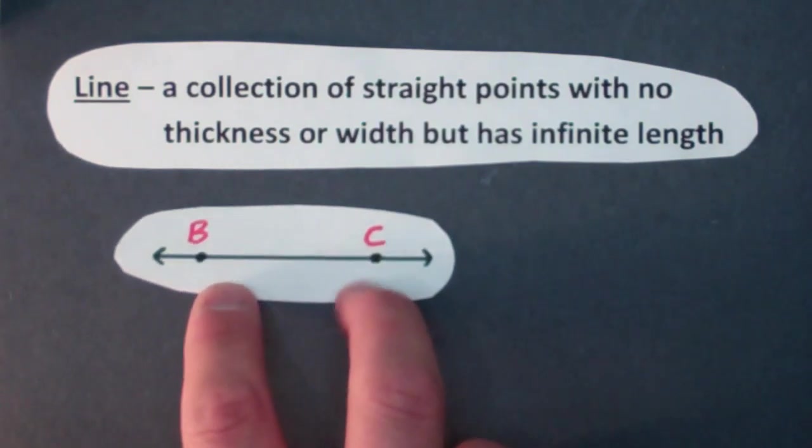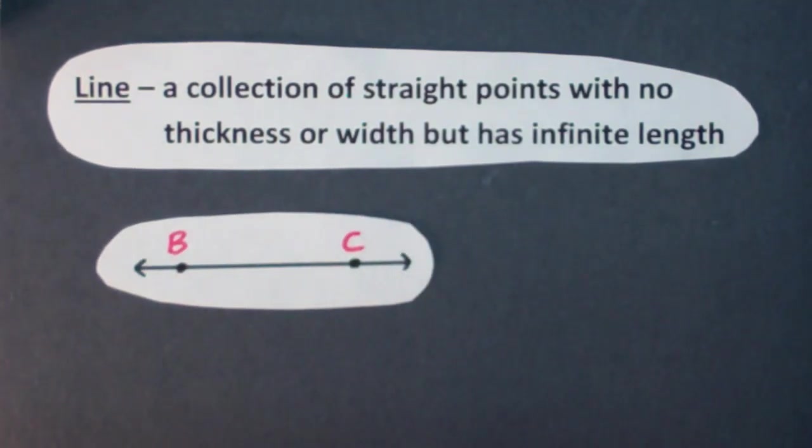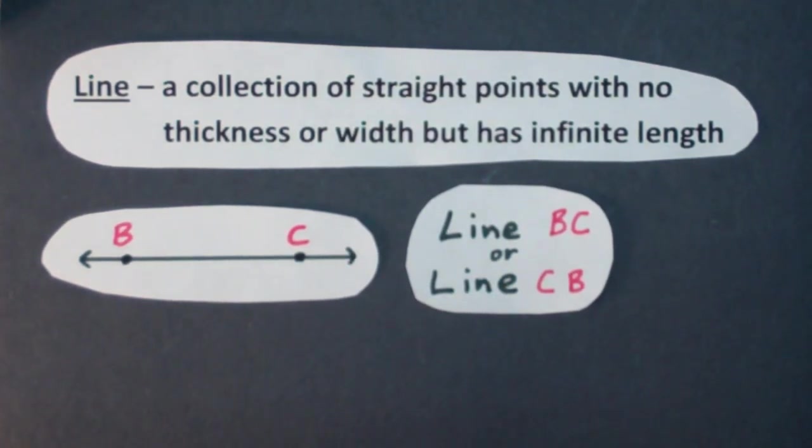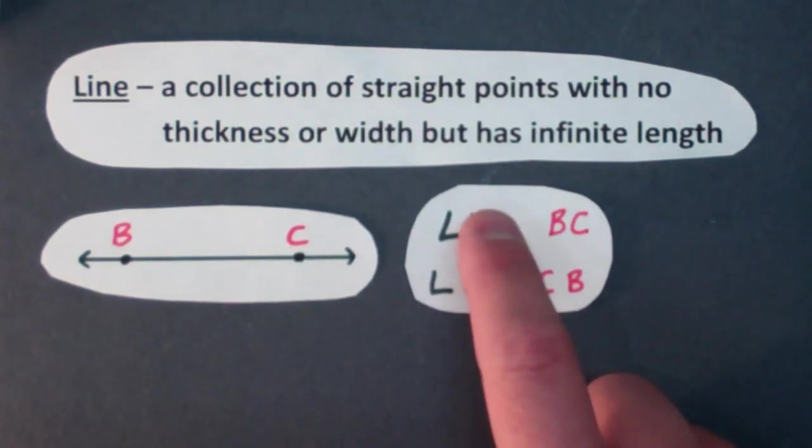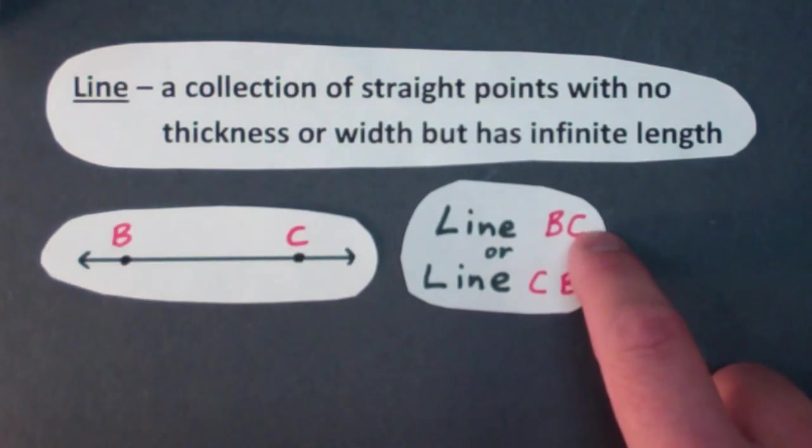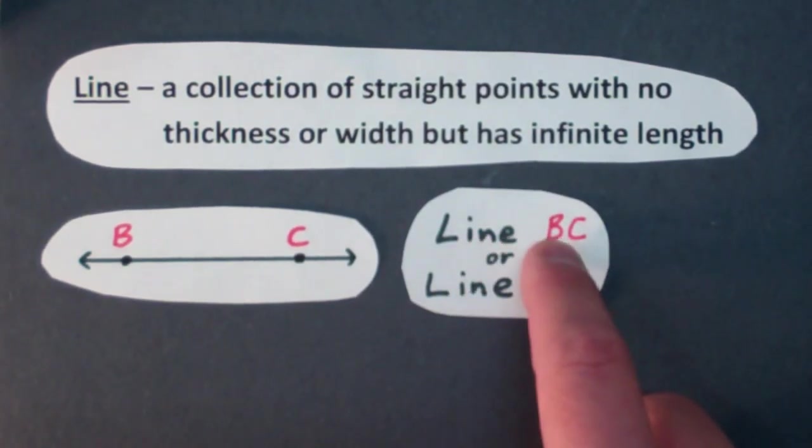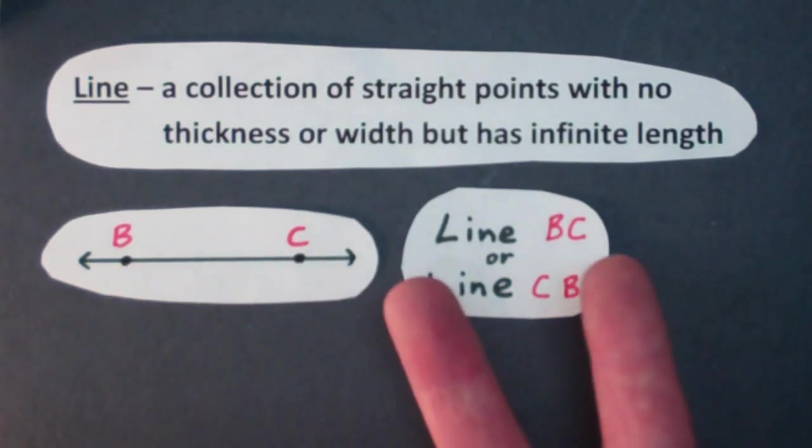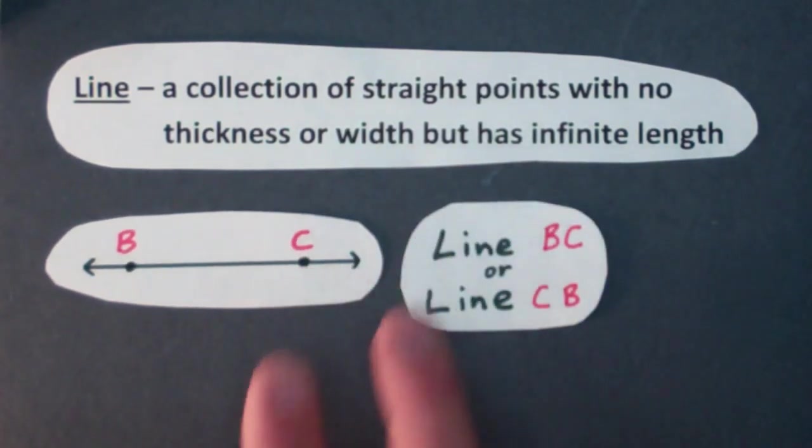And I've pointed out two points here. I pointed out point B and point C and I can use those two points to name the line for like in a sentence or a word problem. So we have the word line and then just the two points that I pointed out in this line. So we have line BC or line CB. It doesn't matter the order that you have those two points.